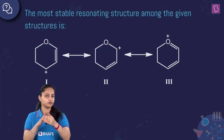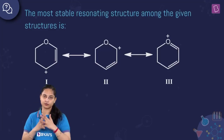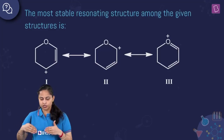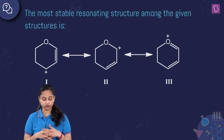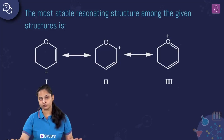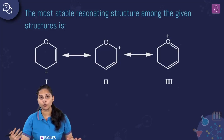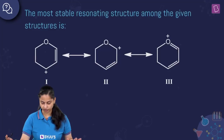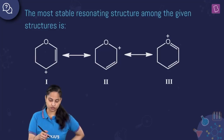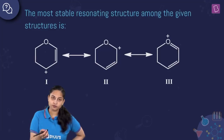If formal charges are present, their separation should be less — unlike charges (positive and negative) should be closer to each other, not farther apart. Since there is no neutral resonating structure here, we count the number of covalent bonds for each structure.